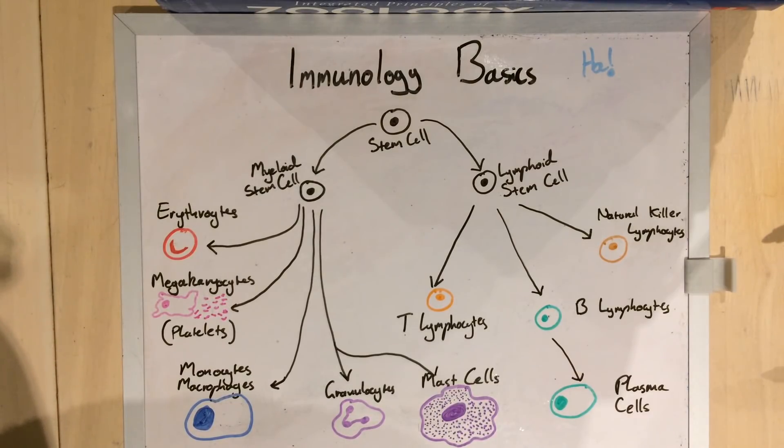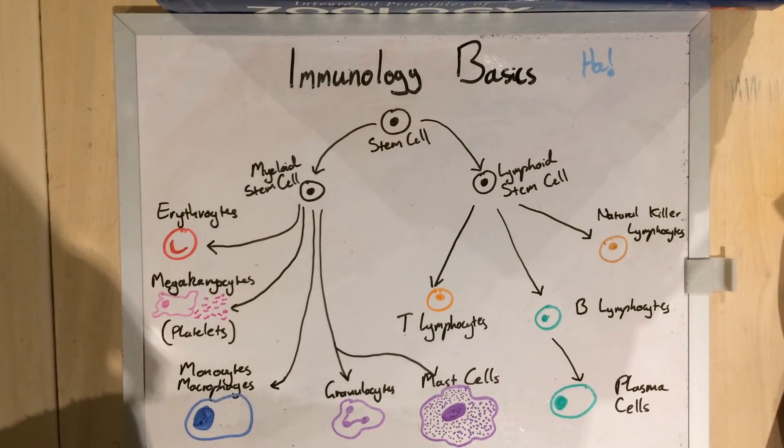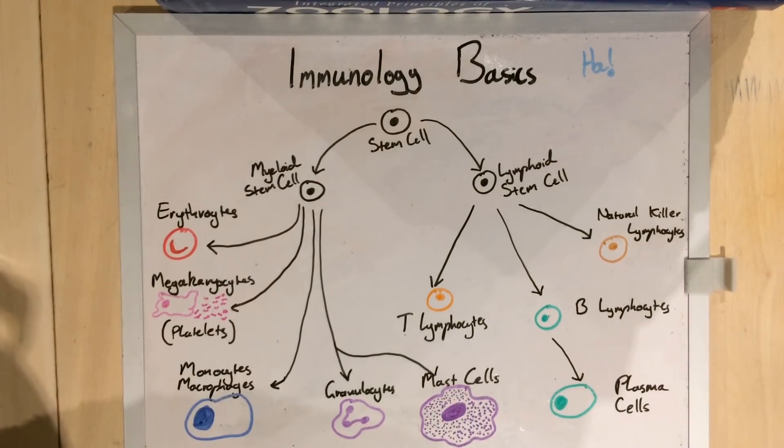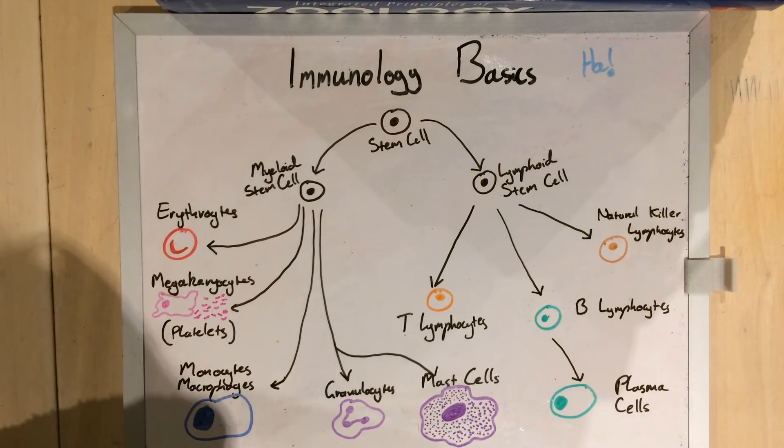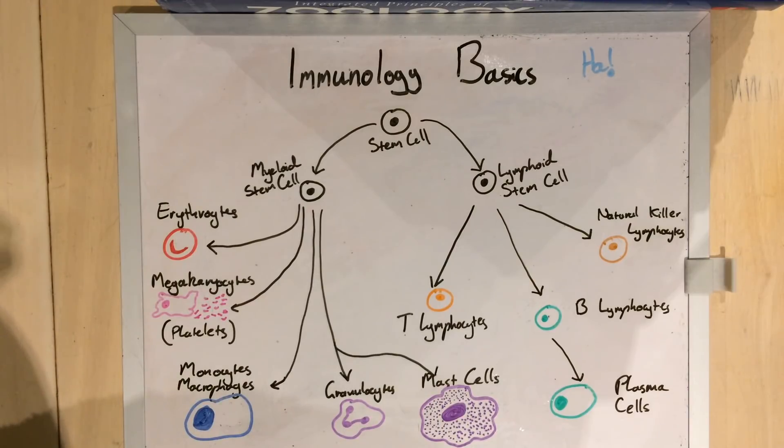The interesting bits of immunology, from my point of view, is the ability to create an adaptive response to a specific antigen. That antigen might be something appropriate, like part of a deadly disease, or it might be something inappropriate, like pollen or your own cells. But the immune system responds to them in basically the same way.